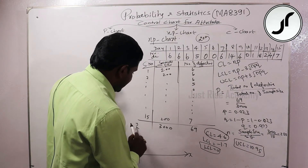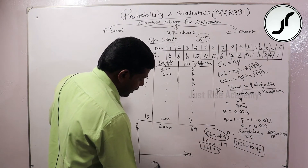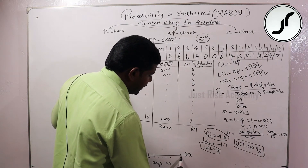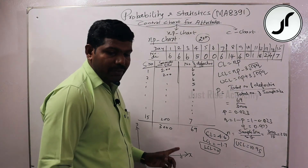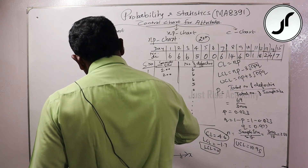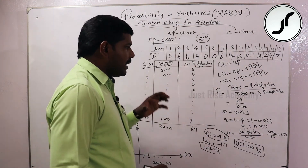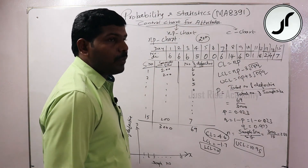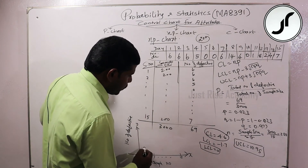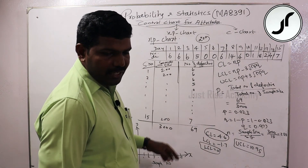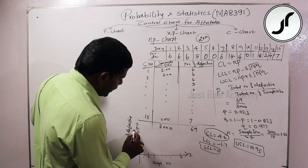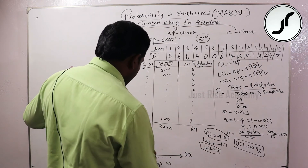The chart has x and y axes. X-axis is sample number: 1, 2, 3... up to 15. Y-axis is number of defectives. For the P chart, the y-axis would be proportion. Here for the NP chart, the y-axis shows defective count values: 4, 6, 8, 10, 12. Center line is at 4.6.